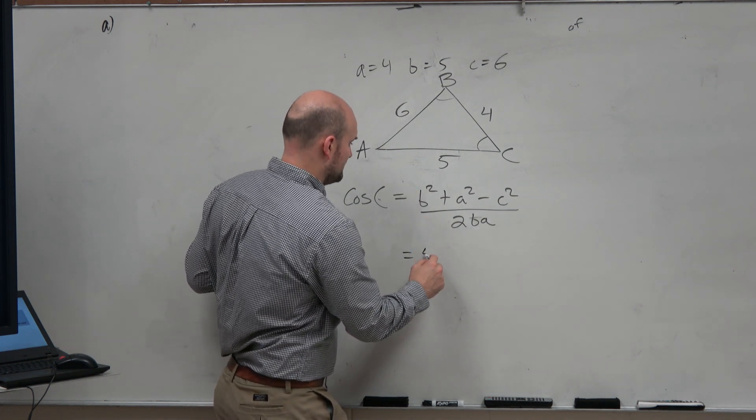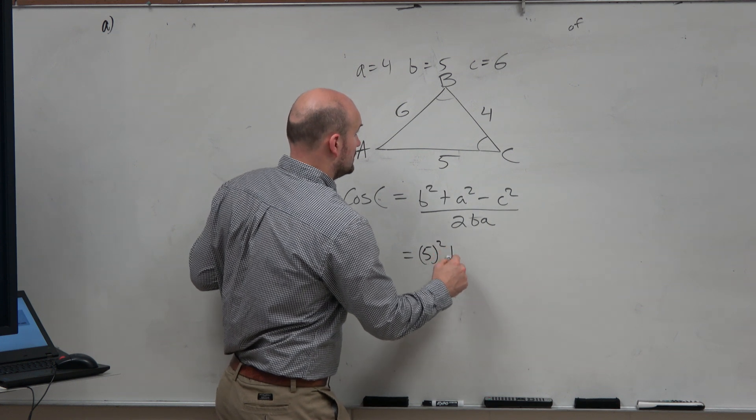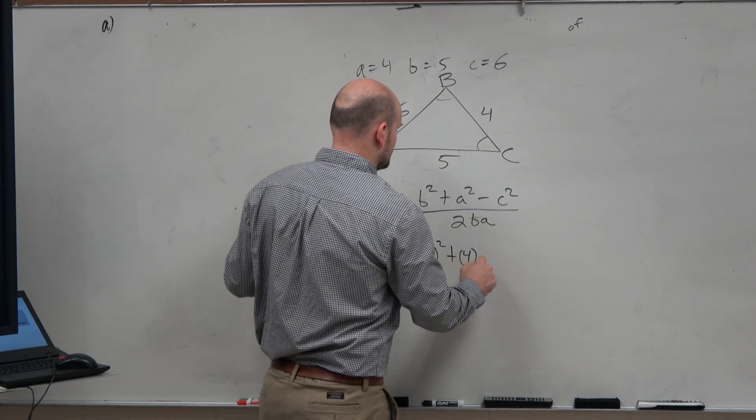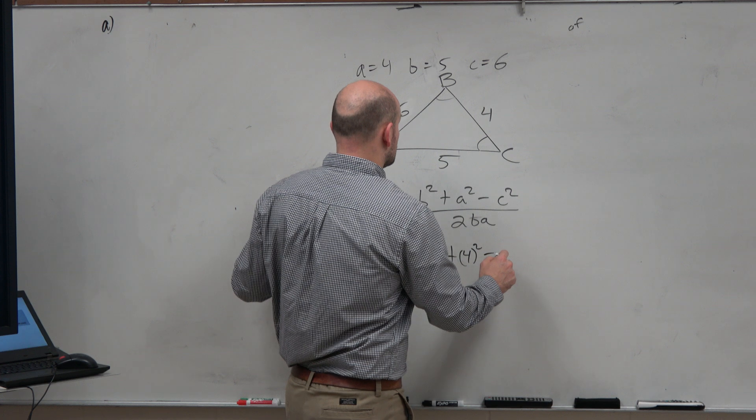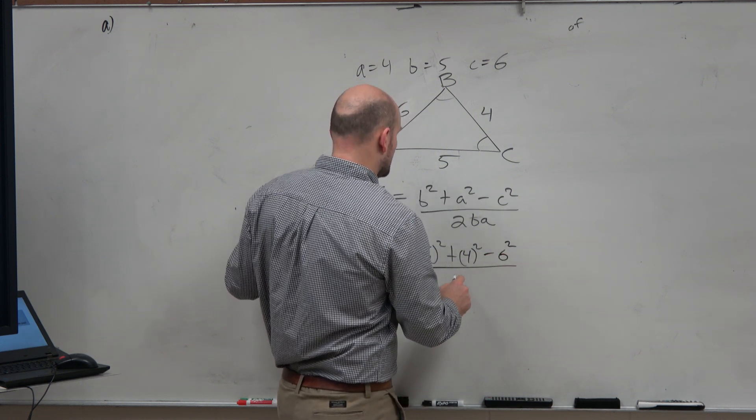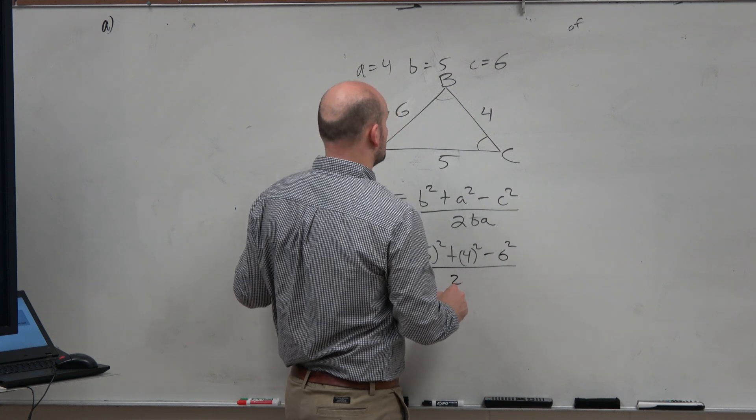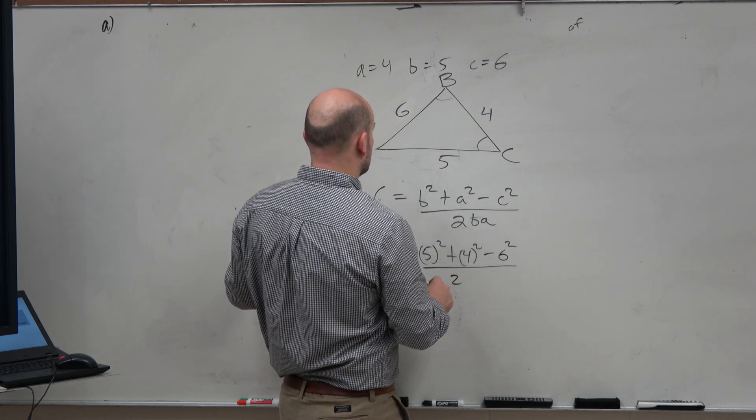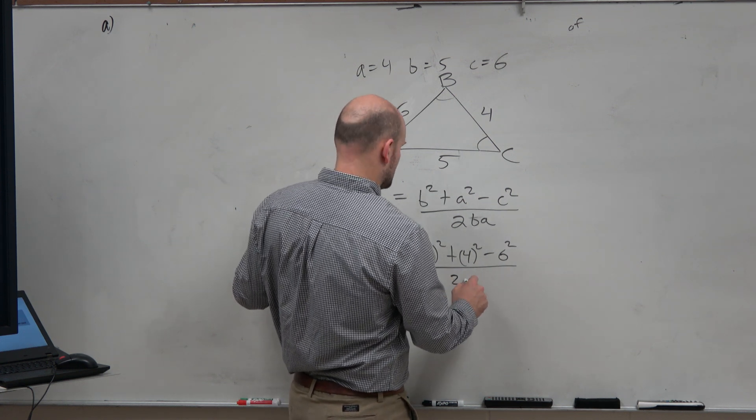So we have B, which is 5, so that's going to be 5 squared, plus A, which is 4 squared, minus C squared. And that's going to be all over 2 times B times A, 5 times 4.